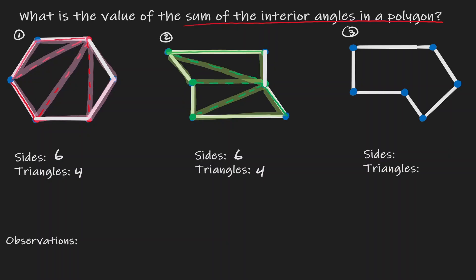Now let's take a look at the third polygon. Again, let me start by choosing a vertex and connect it to all the other vertices. By doing so, we created one triangle, then two, then three, and then four different triangles. So this figure, which also has six different sides, we were able to break it down into four different triangles.